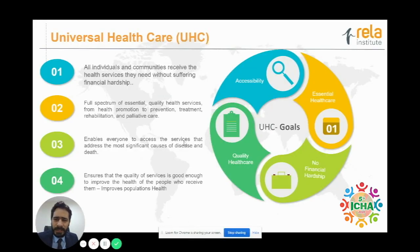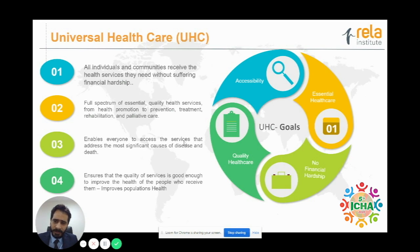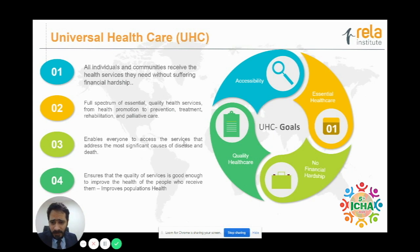What is universal health care? Universal health care is defined as a system which can provide individuals or communities with health services that they need without them suffering financial hardship. That's the core of any UHC. Now UHC has four major goals: accessibility, essential health care, no financial hardship for people who are being covered, and most importantly, quality health care needs to be provided.